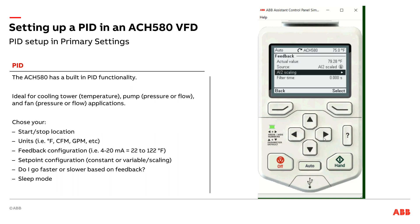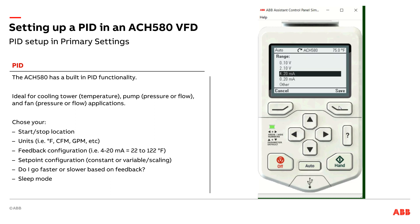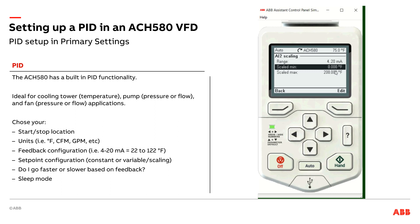The next thing I'm going to do is my scaling. Analog input 2 on the drive is where my sensor is landed. Now I set the range of that sensor — whether it's a 4 to 20 milliamp sensor, a 2 to 10 volt, or 0 to 10 volt. Let's assume it's a 4 to 20 milliamp sensor. You simply say when the sensor's at 4 milliamps, that's the equivalent of 0 degrees Fahrenheit in this example, or if it's 20 milliamps, it's 200 degrees Fahrenheit. Just find out what your sensor is and align the scaling to match it.